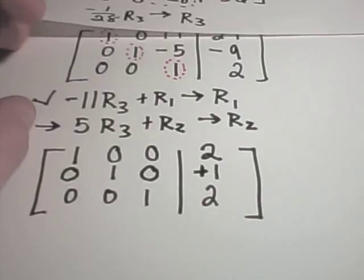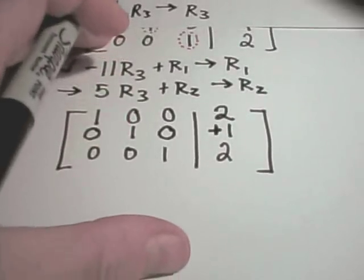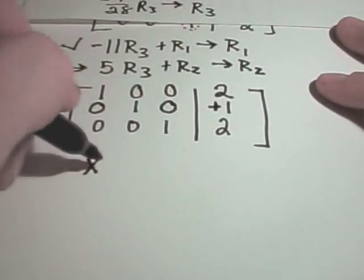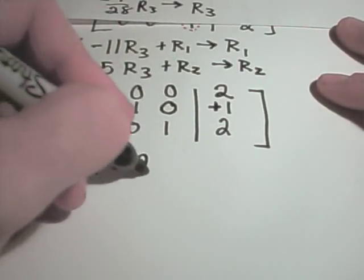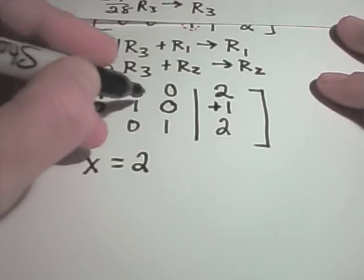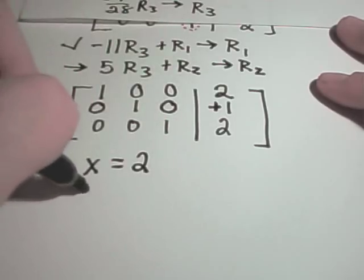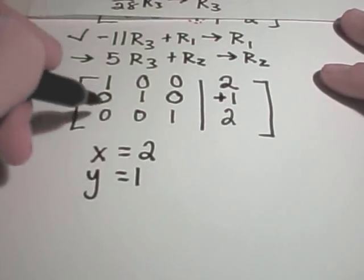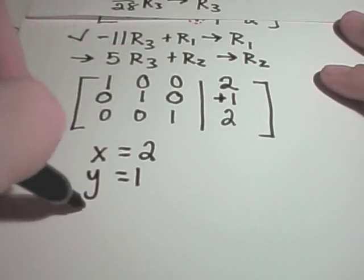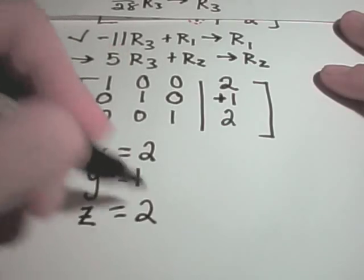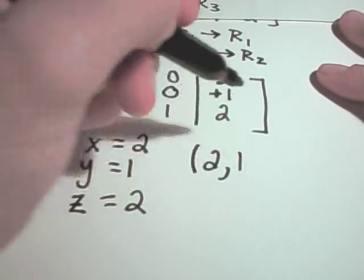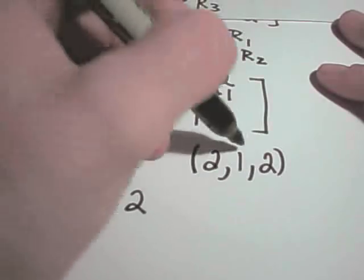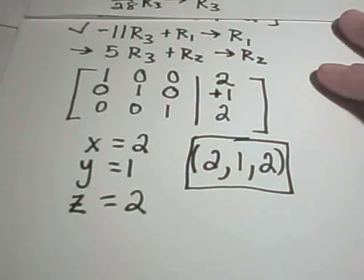Okay, so what this means in conclusion is our solution to this original system of equations, it says 1x plus 0y plus 0z is 2. 0x plus 1y plus 0z is 1, so y equals 1. And then 0x plus 0y plus 1z equals 2. So we have a unique solution, sometimes you'll see it written as 2, 1, 2, to our original system of equations.